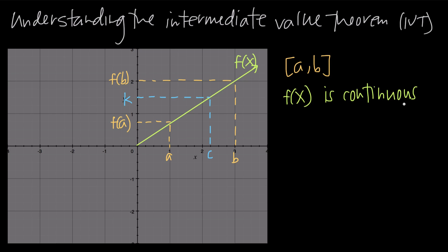There can be some discontinuity in the function outside of the interval — either to the left of a or to the right of b — but as long as f of x is continuous between x equals a and x equals b, then we can use the Intermediate Value Theorem. So: a closed interval a to b, and f of x is continuous on that interval.